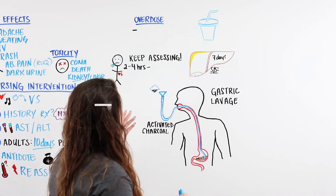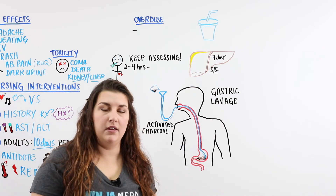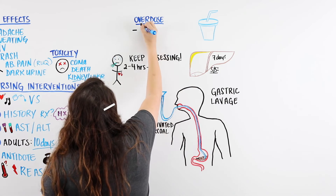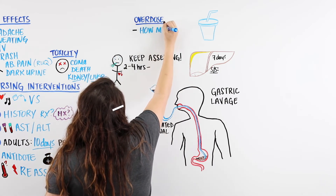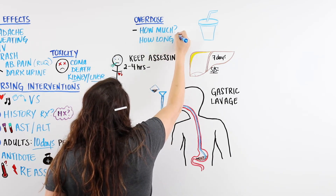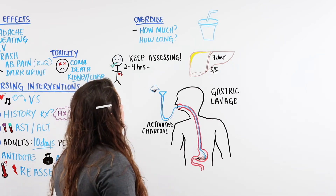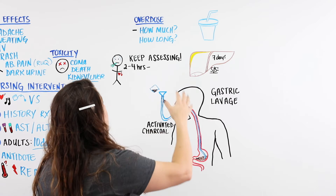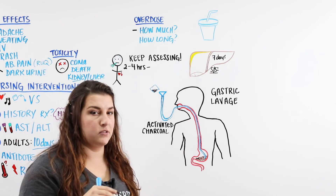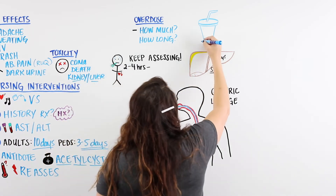If a patient has overdosed, there are things you need to find out from the patient, family, or friends. First, find out how much Tylenol they took, and second, how long ago they took it. This helps determine whether we're still in the initial window or whether the patient may be slipping into a coma or becoming very lethargic and altered. Then we give the antidote.